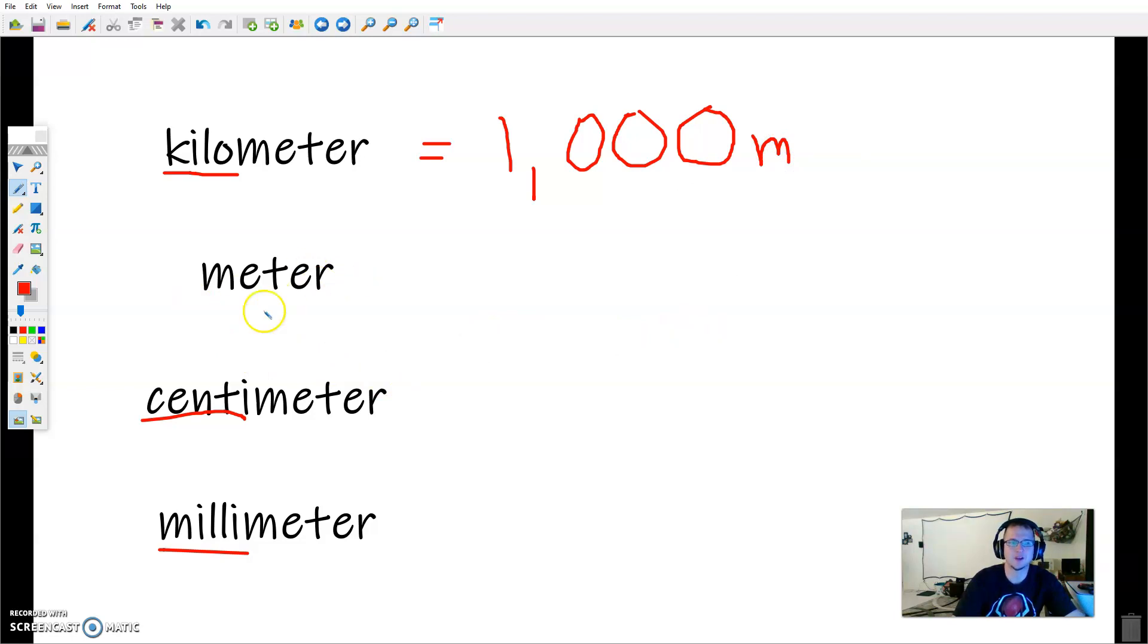Now, the meter being our base unit, one meter equals one meter. So that's not very helpful. But if we move down to centimeter, I want you to think of cent like money. How many pennies are in a dollar? Well, 100 pennies are in a dollar. So there are 100 centimeters in a meter, which means a centimeter is equal to 1/100 of a meter.